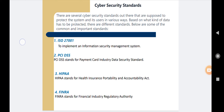The first standard is ISO 27001. This is one of the common standards that requires organizations to implement an information security management system. The second is PCI DSS, which stands for Payment Card Industry Data Security Standard. This standard must be adopted by organizations that accept payment through their gateway.